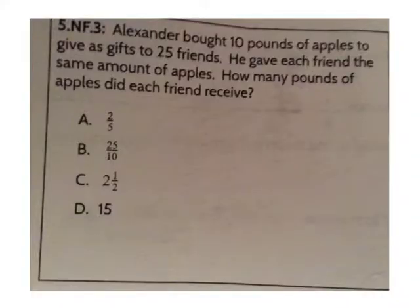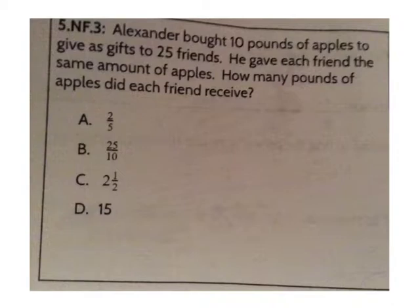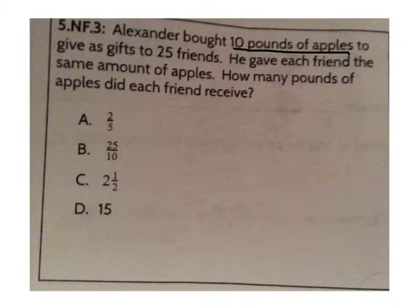Let's start with the first do now question. Alexander bought 10 pounds of apples to give as gifts to 25 friends. He gave each friend the same amount of apples. How many pounds of apples did each friend receive? Let's start by figuring out what is being split up in this problem. Is Alexander splitting up the 10 pounds of apples or the 25 friends? He's splitting up the 10 pounds of apples. What division sentence represents this problem? The division sentence is 10 divided by 25.